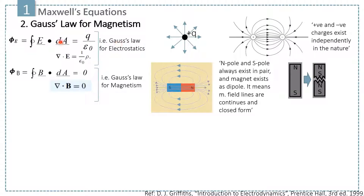In this lecture, we will discuss Gauss's law for magnetism. Before starting, let's recall Gauss's law for electrostatics, which says that the total flux through any closed surface is equal to 1 over epsilon-0 times the total charge enclosed in that surface.